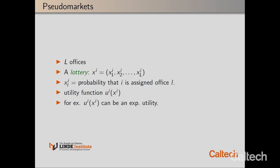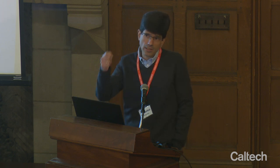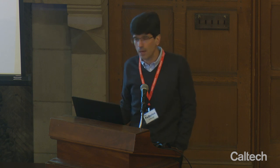Here's how it works. If you have L offices, then a lottery is a probabilistic quantity: Xi consists of L numbers, one for each office, and X_iL is the probability that agent i gets office L. Each agent evaluates such lotteries through a utility function U_i — you can think of this utility as the expected value of the lottery. If I assign a certain number to each office I may get, I can calculate the expected value of that lottery, and that's how I value it.